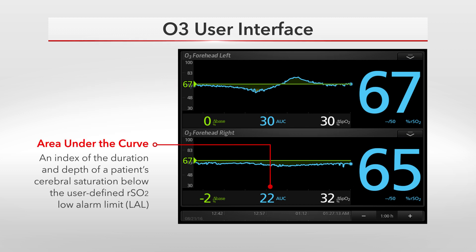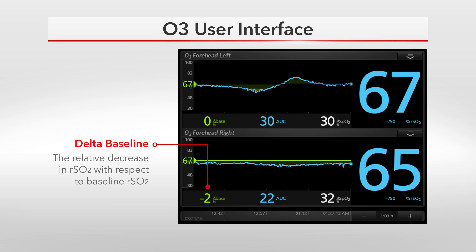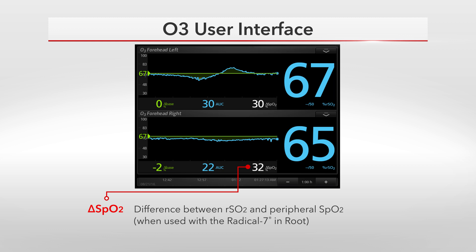Additional metrics include Area Under the Curve, an index of the duration and depth of a patient's cerebral saturation below the user-defined RSO2 low alarm limit; Delta Base, the relative decrease in RSO2 with respect to baseline RSO2 expressed as a percentage; and Delta SPO2, the difference between RSO2 and peripheral SPO2, when used with the Radical 7 on Root.